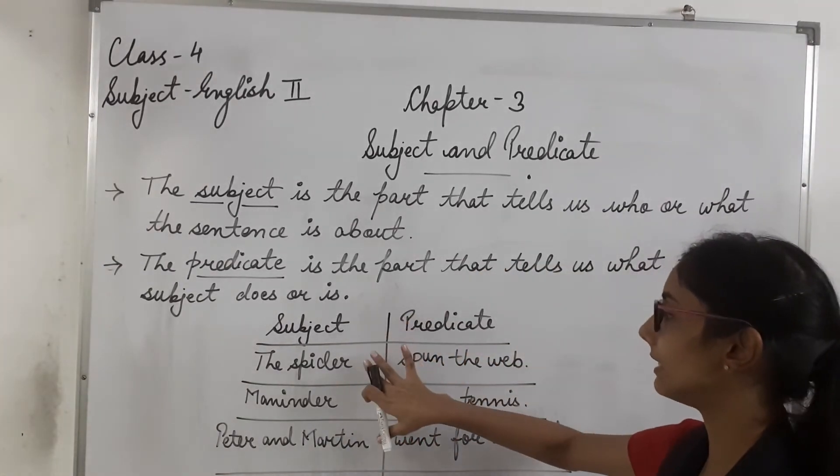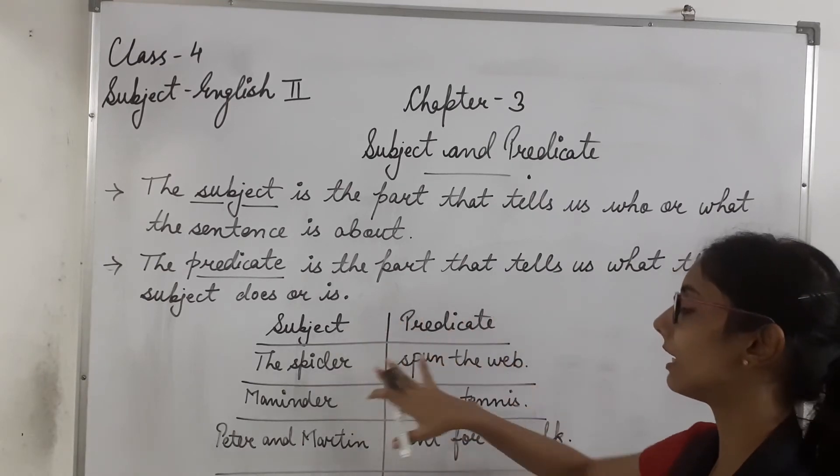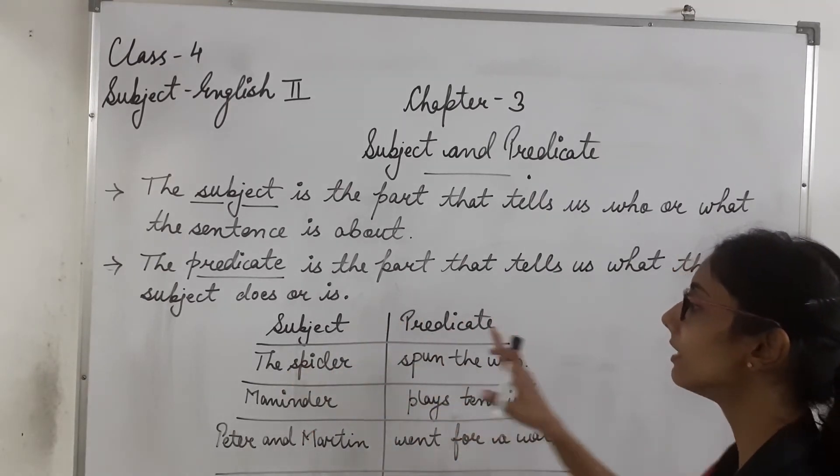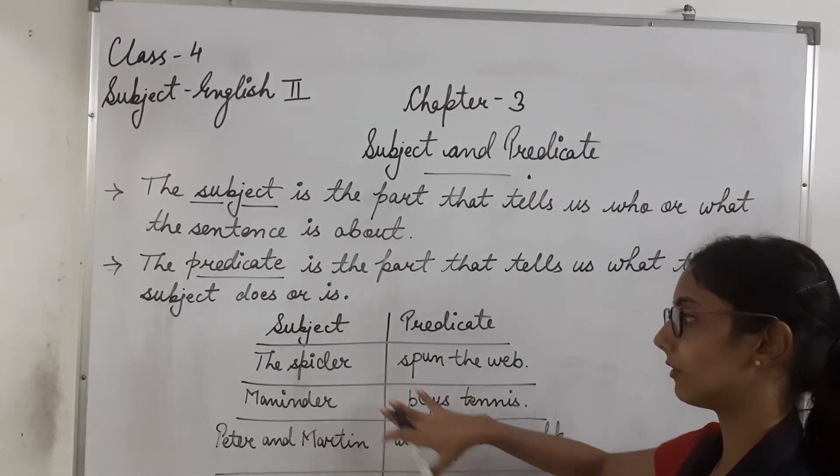Ab in sentences ko dekho. Isme subject or predicate alag-alag kya hai. Yeh pura eek sentence hai. Toh in doon sentences ko divide kya hai kis kis me? Subject me or predicate me.